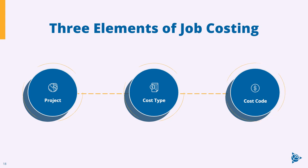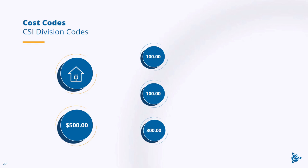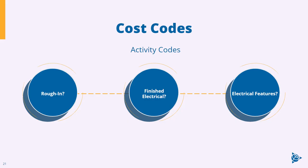Now let's get into the details on how the money is spent. Was it spent on electrical? Was it site work? How about concrete? These are all examples of CSI division codes. For example, if you spent $500 at Home Depot, you might break that down as $100 for concrete, $100 for electrical, and $300 for masonry — those are the division codes. Activity codes provide a more detailed breakdown within each division, representing specific tasks or activities. For example, within electrical, you'd want to know: was it rough-in electrical, finished electrical, or installing electrical fixtures?